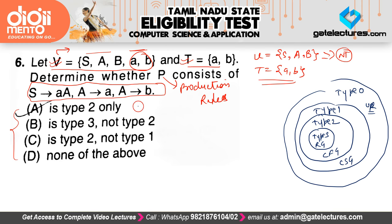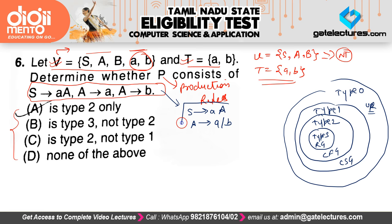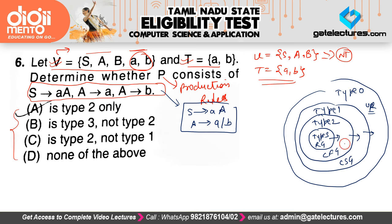The set of productions given are: S derives small 'a' A, and A derives small 'a' or small 'b'. They are asking whether this is Type 3, Type 2, Type 1, and so on. Note that every Type 3 grammar is also Type 2, every Type 2 is also Type 1, and every Type 1 is also Type 0.